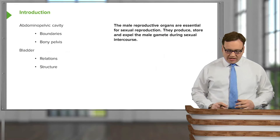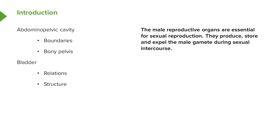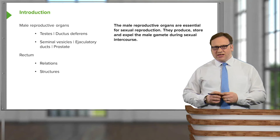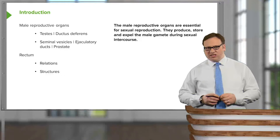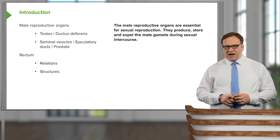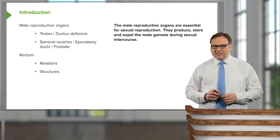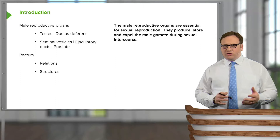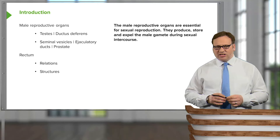In this lecture, we're going to look at the male reproductive organs. We're also going to look at the bladder and the rectum. We'll start by looking at the boundaries of the abdominopelvic cavity and the bony pelvis. We'll look at the bladder, its relations to other organs, and its structure. Then we'll spend considerable time on the male reproductive organs — the testes, ductus deferens, seminal vesicles, ejaculatory ducts, and prostate. Finally, we'll look at the rectum. The male reproductive organs are essential for sexual reproduction: they produce, store, and expel the male gamete sperm during sexual intercourse.